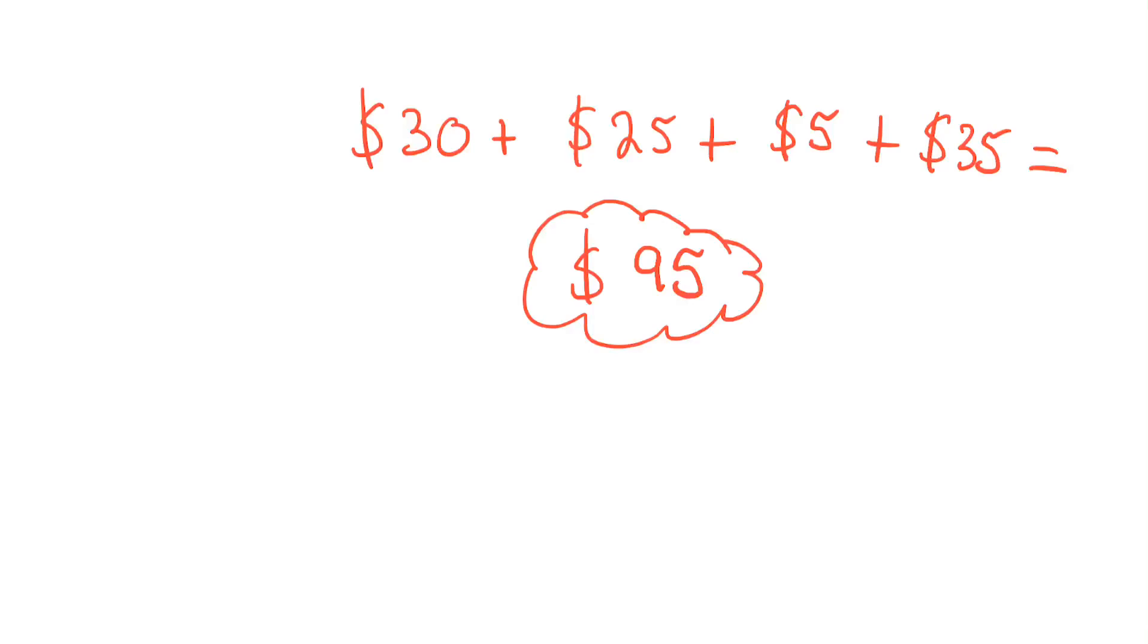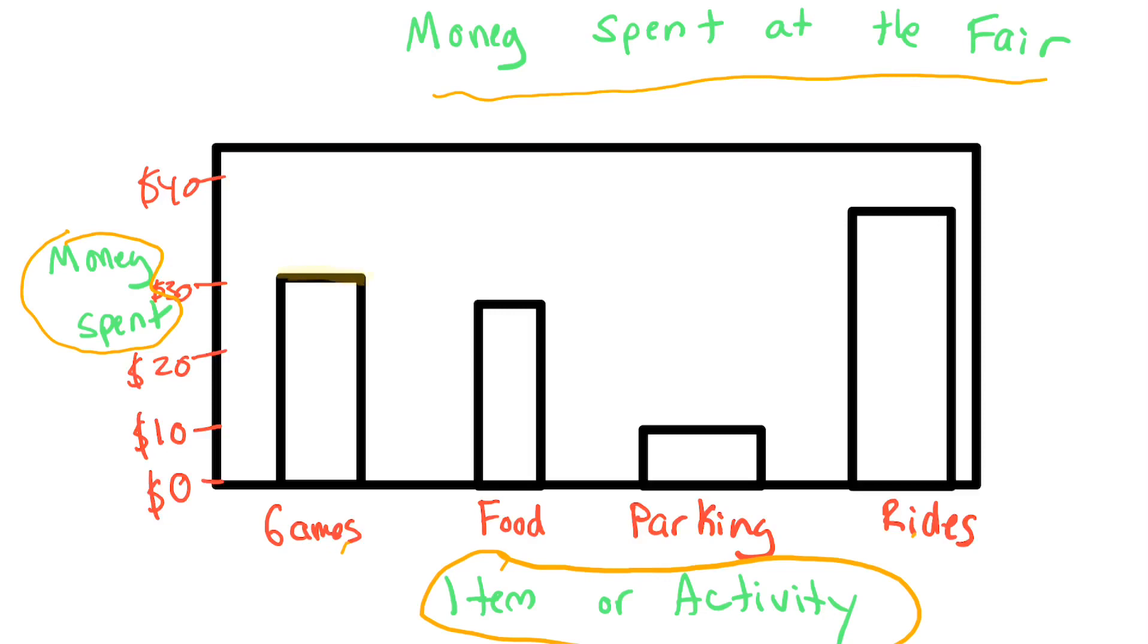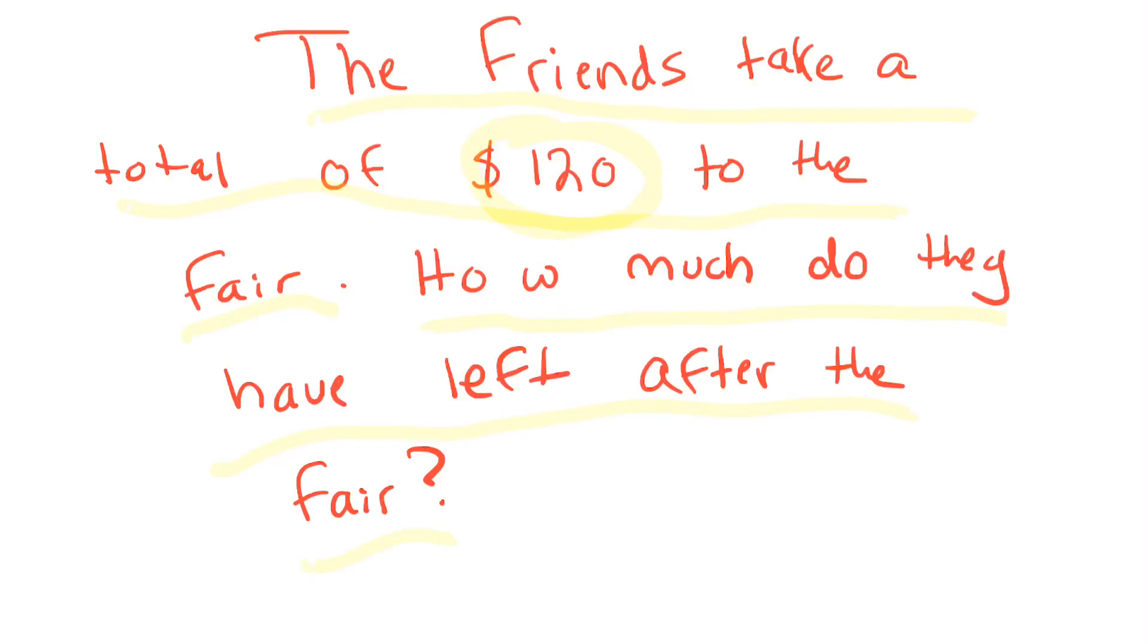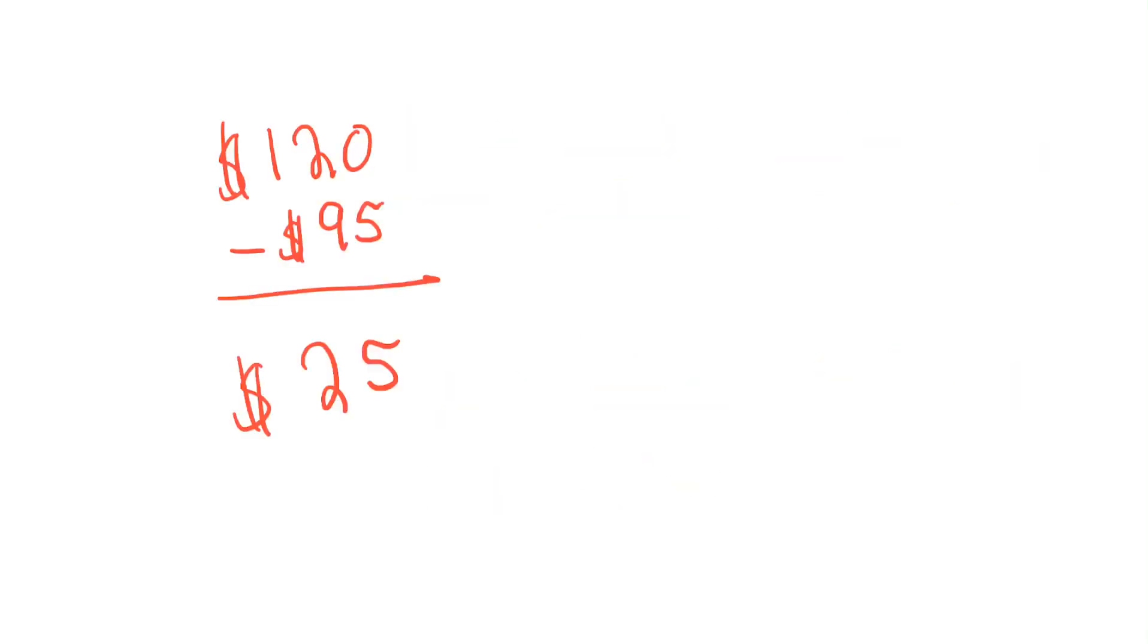So here's what we did. I looked at that graph. I went back to the graph. And I see 30, 25, 5, and 35. I'm going to plug those in, 30, 25, 5, and 35. I add all those together and my total is 95. Now I have to take this and I have to subtract 95 from the total.